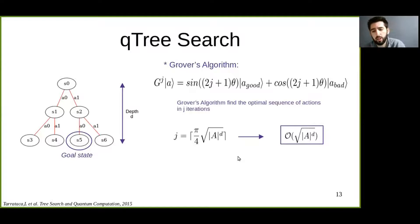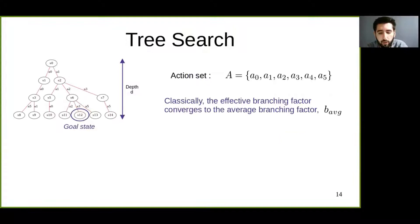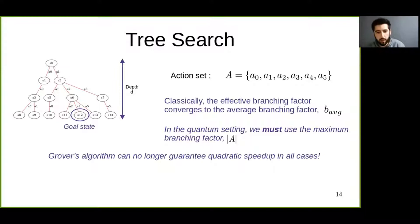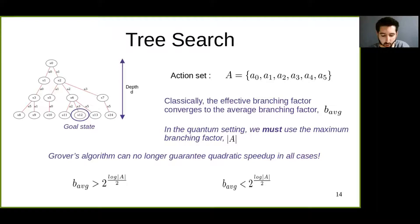An interesting question arises: what happens when we have non-constant branching factor trees? We know that the effective branching factor converges to the average branching factor. However, in the quantum setting, we cannot use the average branching factor — we must always use the maximum branching factor, because we don't have a way of distinguishing what action to take at what state. It turns out that Grover's algorithm can no longer guarantee a quadratic speedup in all cases. Specifically, when the average branching factor is greater than half of the number of superposition terms, Grover's algorithm provides a speedup, and in the opposite direction it can no longer provide a speedup.